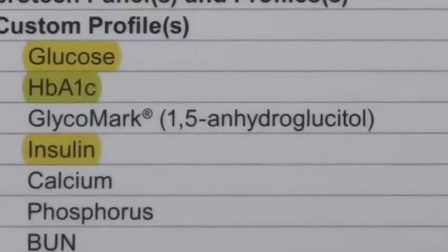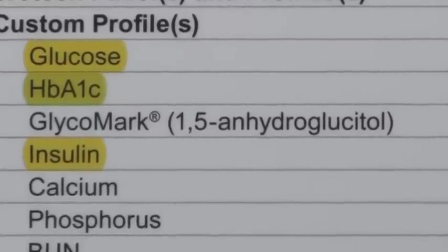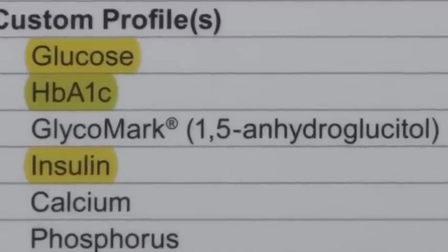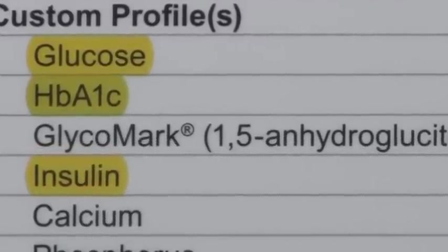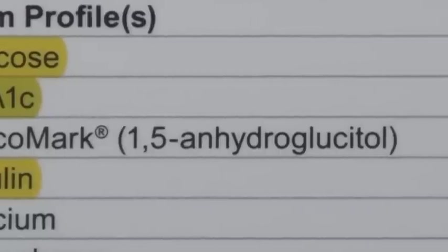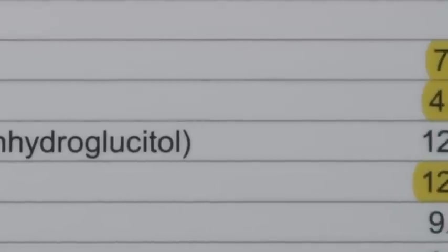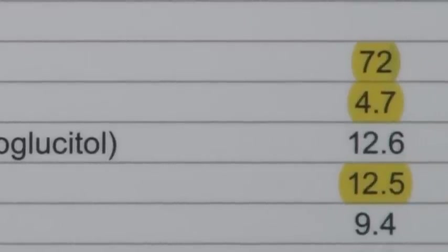If glucose levels while fasting are over 100 or your HbA1c is over 5.6%, you need to limit refined carbs and sugars and adopt a carbohydrate-controlled diet plan. You also need to discuss these results with your primary care physician to determine if medication is warranted.